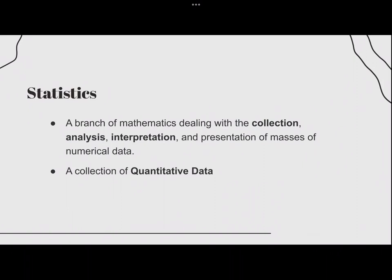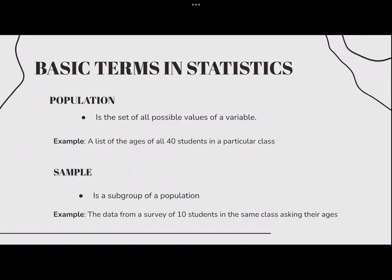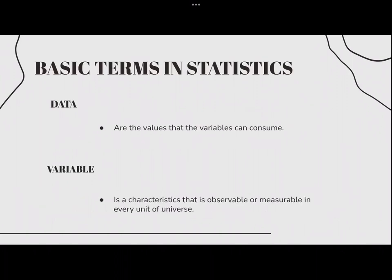Statistics is also a collection of quantitative data. Now we have the basic terms in statistics. The first basic term is population — we're talking about all the items of interest, or this is the set of all the possible values of a variable. For example, a list of the ages of all 40 students in a particular class. Next is the sample, which includes some of the items in the population, or this is a subgroup of a population. For example, the data from a survey of 10 students in the same class asking their age.